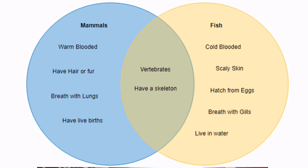For example: mammals are warm-blooded, have hair or fur, breathe with lungs, and have live births; while fish are cold-blooded, have scaly skin, hatch from eggs, breathe with gills, and live in water. But both mammals and fish are vertebrates and have a skeleton.